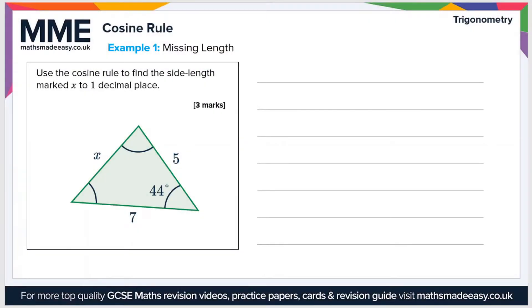So let's take a look at an example question now. Use the cosine rule to find the side length marked x to one decimal place. So first of all let's rewrite the cosine rule. So a squared equals b squared plus c squared minus 2bc cos a.